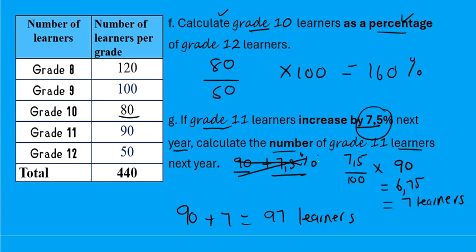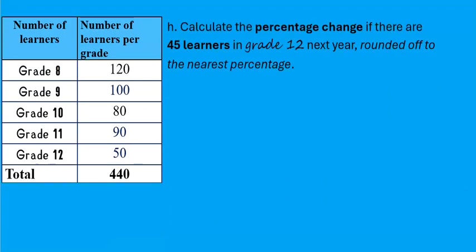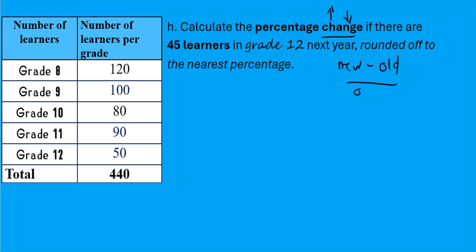The last question: calculate the percentage change. For a percentage change — whether it's a percentage increase or decrease — this is the formula: new minus old, over old, times 100. This is the formula we always use when calculating a percentage change.